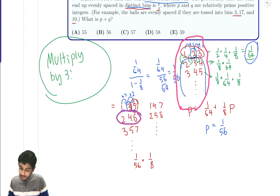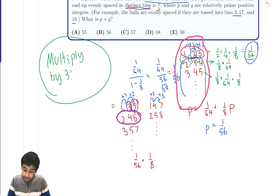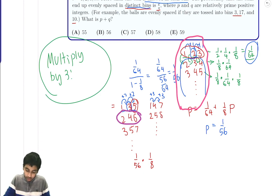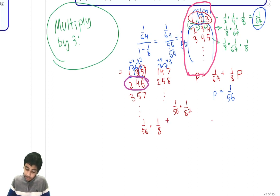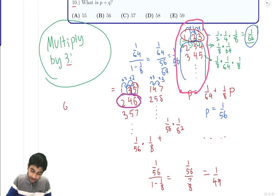Summing all spacing families — 1/56, (1/8)(1/56), (1/8)²(1/56), ... — gives another infinite geometric series: (1/56) ÷ (1 − 1/8) = (1/56) ÷ (7/8) = 1/49. Remember to multiply by 3 factorial for orderings: 6 × (1/49) = 6/49. So P + Q = 6 + 49 = 55, which is the answer.